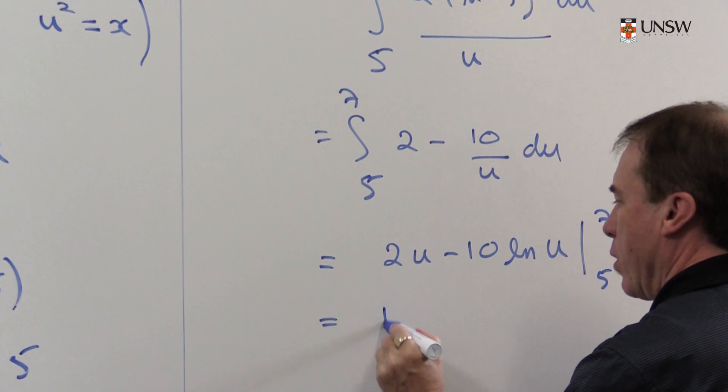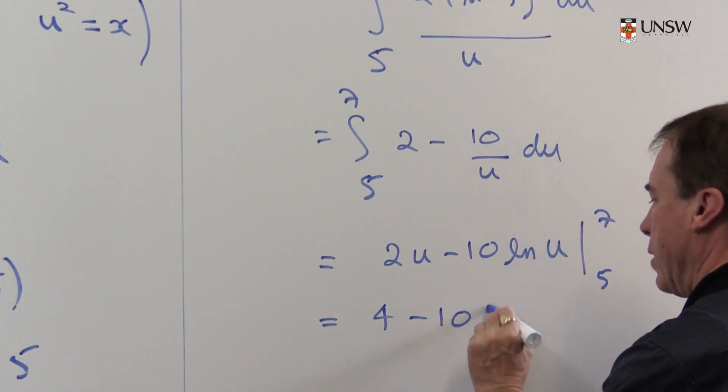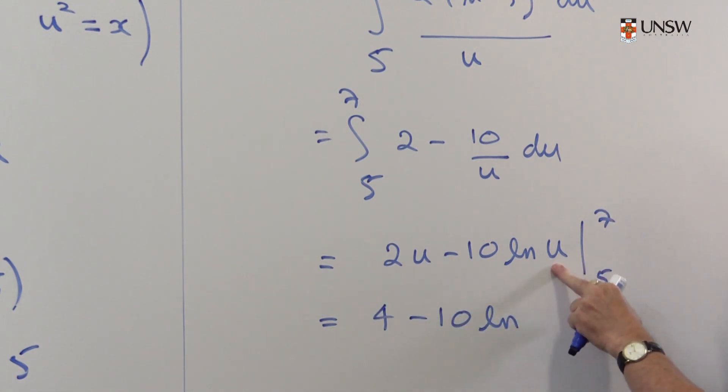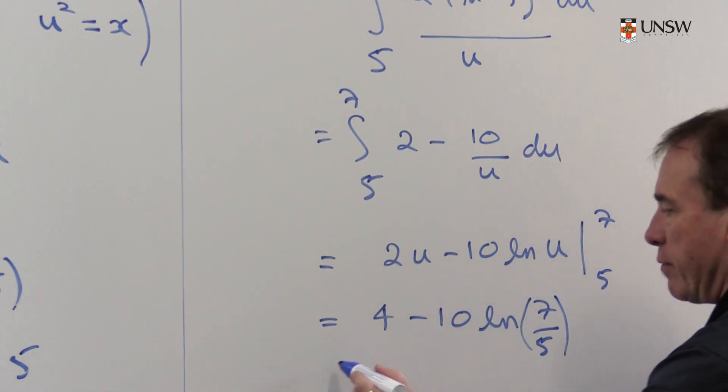So I'm going to get 4 here minus 10 log. I'll get log 7 minus log 5 and the log laws tell me that I can write that as 7 over 5. And that's the end of the integral.